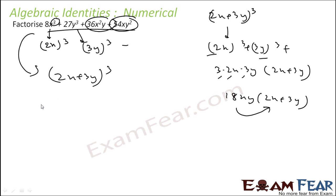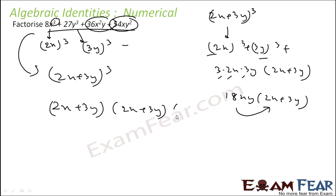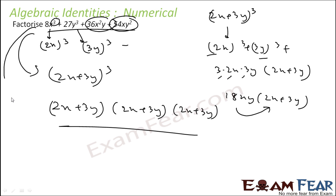Just by knowing the formula, I can say that this is nothing but (2x + 3y)³. So I can write this as (2x + 3y) × (2x + 3y) × (2x + 3y). Thus I have factorized this pretty easily just by knowing the formula.